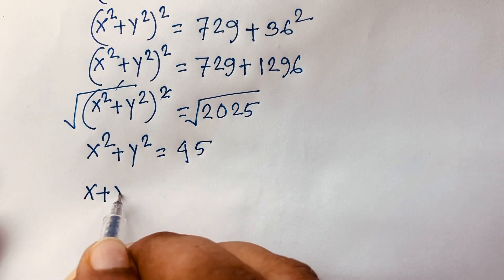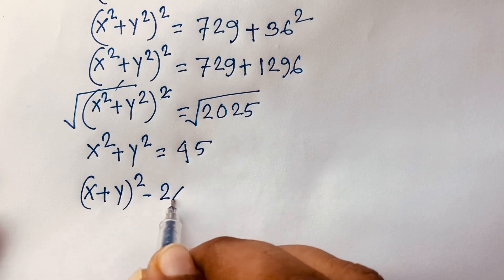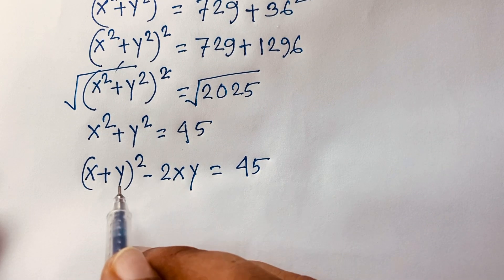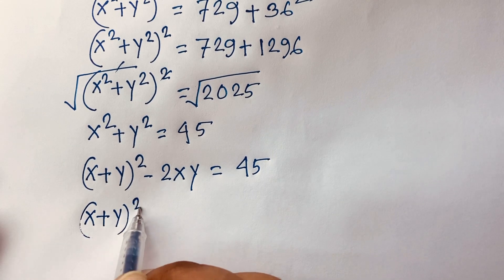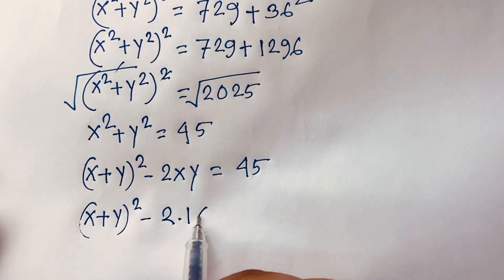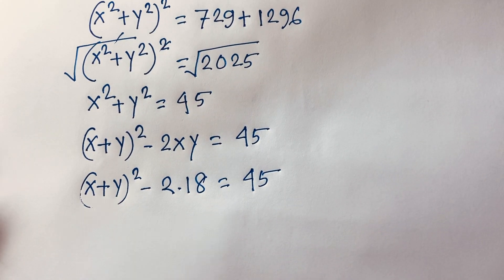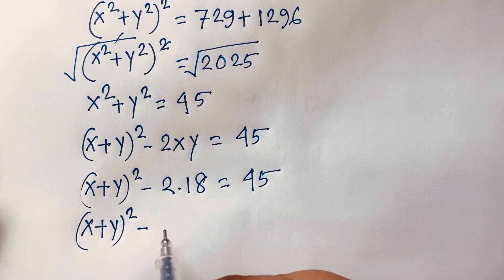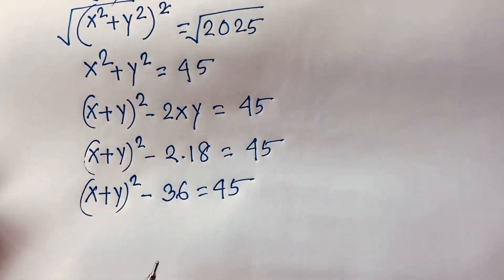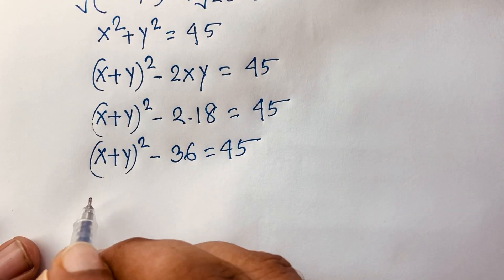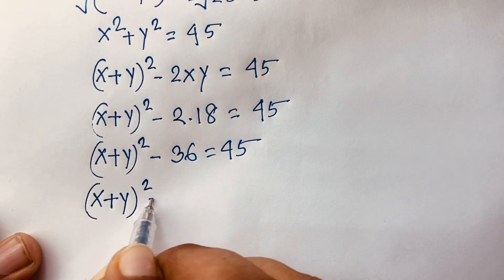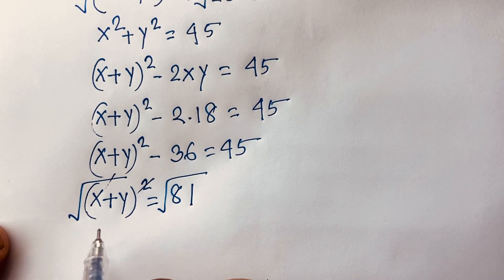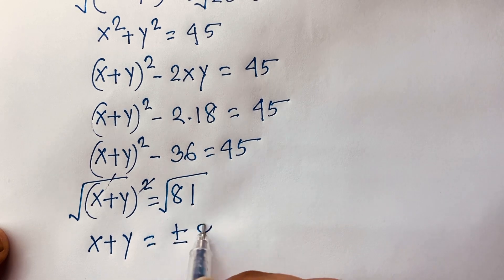We know that a squared plus b squared equals a plus b whole square minus 2ab. Here we have 45. So I can say x plus y whole square, and remember that 2 times xy equals 2 times 18, which is 36, equals 45. This becomes x plus y whole square minus 36 equals 45, so x plus y whole square equals 81. Using square root on both sides, we find x plus y equals plus or minus 9. This is our final answer.